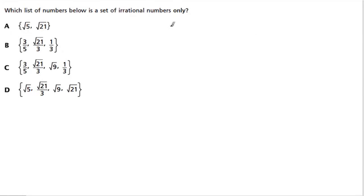Hey, here they're asking us, which list of numbers below is a set of irrational numbers only? Well, the set just means group of numbers, and here actually the answer is A. But let me tell you why I know that.